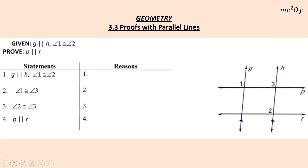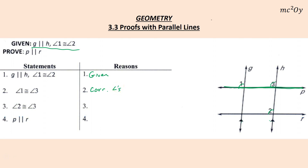Now we'll do some proofs. Given that G is parallel to H and angle 1 is congruent to angle 2, prove that P is parallel to R. G parallel to H is marked for us. Angle 1 congruent to angle 2 is also given. We do know that angle 1 is congruent to angle 3, because we have parallel lines and angles 1 and 3 are on the same transversal — we use the corresponding angles theorem.